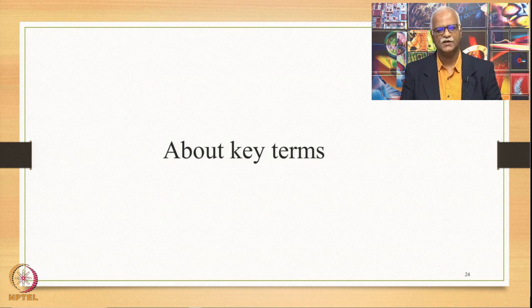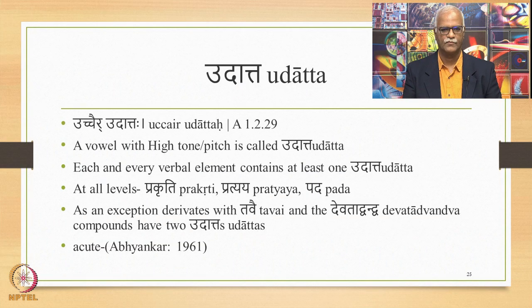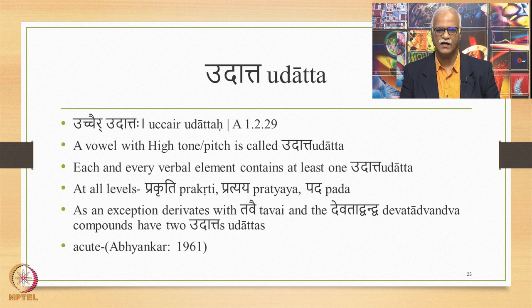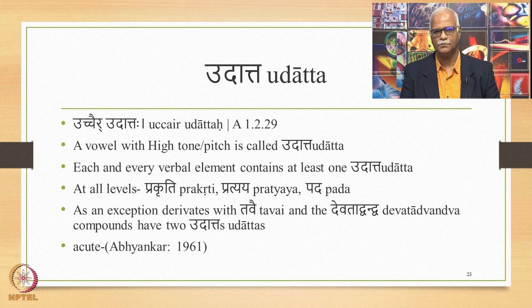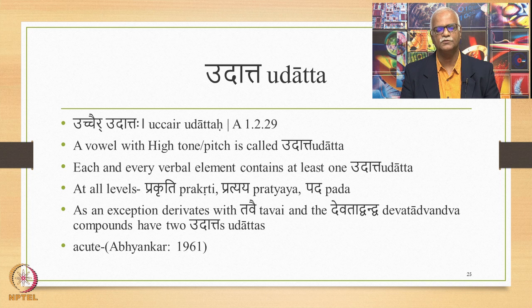About certain key terms used in the context of the accentual rules. First, Udhatta — defined as Ucchair Udhatta. A vowel with high tone or pitch is called Udhatta. Each and every verbal element contains at least one Udhatta, at all levels: whether it is a Prakriti or a Pratyaya or a Pada. As an exception, derivates with Tavai and the Devata Dvanva compounds are said to have two Udhattas.